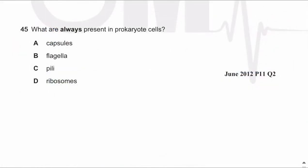Assalamu alaikum everyone. In this video lecture we will be discussing the MCQs of cell structure, which is the topic of AS Level Biology 9700. Let's start with MCQ number 45: what are always present in prokaryote cells?